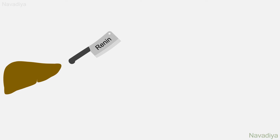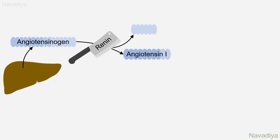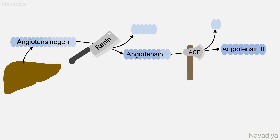Regarding synthesis of angiotensin II: the liver releases angiotensinogen all the time into the blood circulation. Renin cleaves off angiotensin I from it. Then angiotensin converting enzyme removes two more amino acids and produces angiotensin II.